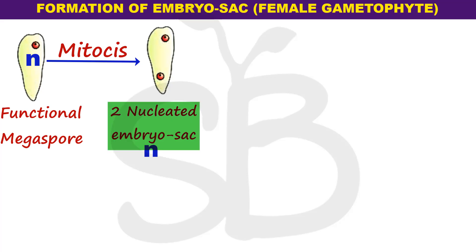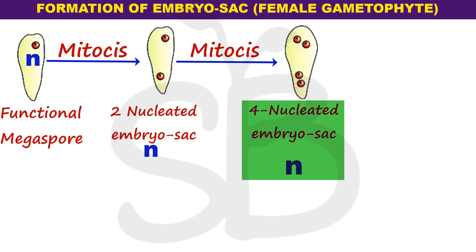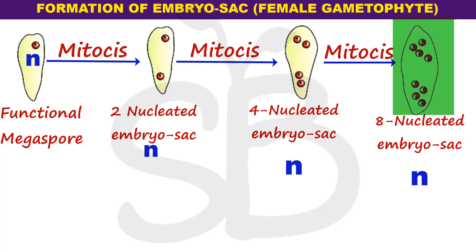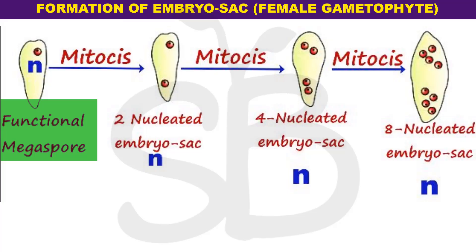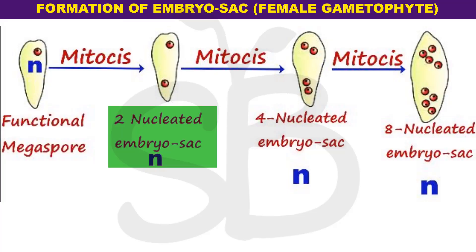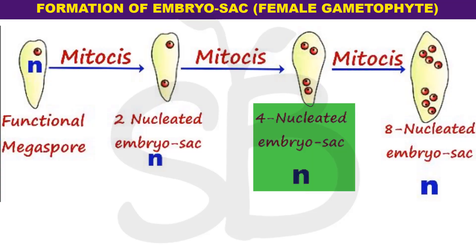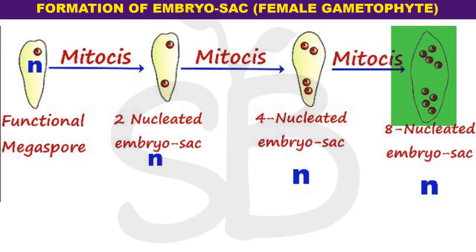This gives a 2-nucleated embryo sac. Then the 2 nuclei undergo one more mitotic division, forming a total of 4 nuclei. Then one more mitotic division follows, giving 8 nuclei. This is a total of 3 mitotic divisions: functional megaspore → 2-nucleated → 4-nucleated → 8-nucleated embryo sac.